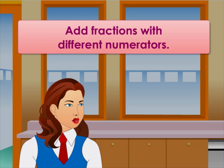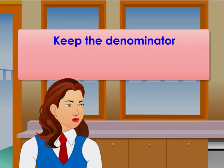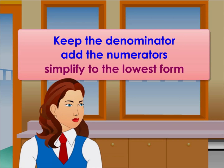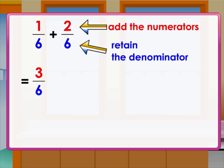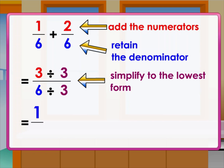What happens if we want to add fractions with different numerators but common denominators? No problem. When the denominator is common, we just add the numerators, then simplify to the simplest form by dividing both the numerator and the denominator by the same number. They have a common denominator, so we add the numerators: one added to two becomes three. We get three as the numerator and six as the denominator. To simplify three over six, we divide both by three. Three divided by three is one, and six divided by three is two. So the simplest form of three over six is one over two.